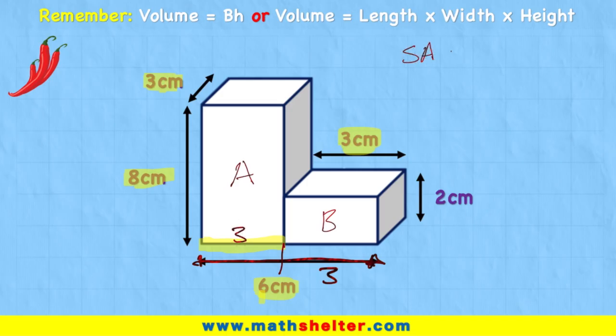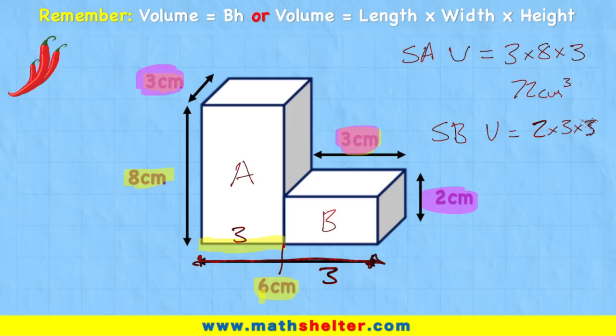So shape A volume equals 3 times 8 times 3, and 3 times 8 times 3 is 72. 72, that's right, centimeters cubed. And then shape B volume equals, now let's work this out carefully, because I have 3 centimeters for the length, I have 2 centimeters for the height, but where's the width? Well that's right, it must be the same width as this 3 over here, because we have the same width all the way around. So I would have 2 times 3 times 3, which gives me a total of 18 centimeters cubed. Am I finished? No, because I've just done the individual parts, now I need to get my two totals, 72 and 18, add them together, and that gives me a total of 90 centimeters cubed. Simple!